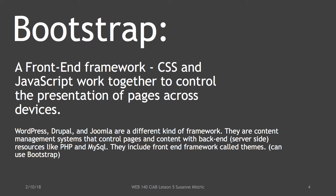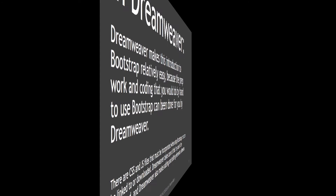WordPress, Drupal, and Joomla are a different kind of framework. They are content management systems that control pages and content with back-end or server-side resources like PHP and MySQL. Content management systems do include a front-end framework called themes, and they can incorporate Bootstrap.